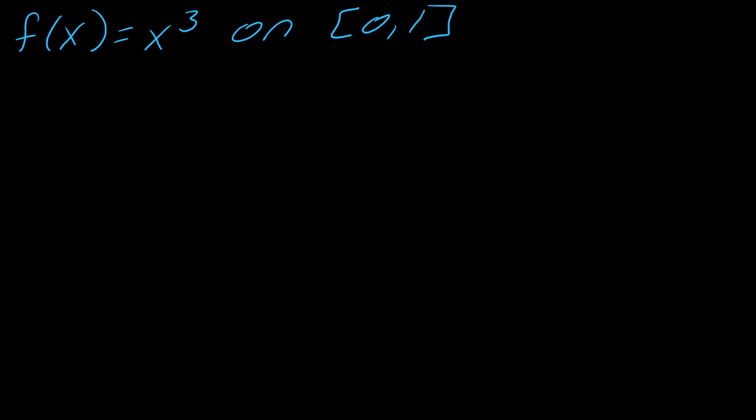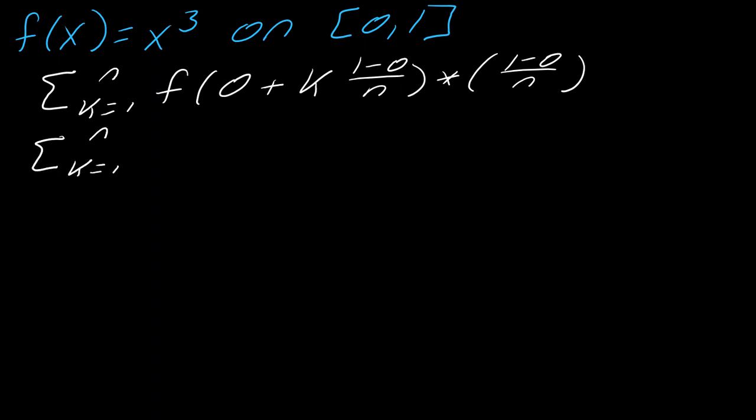Okay, so I am going to set that up as well. That is like the worst looking sigma ever. So let's see, here's k equals 1 to n, f of, this starts at 0. This will be 1 minus 0 divided by n, all of that times 1 minus 0 divided by n. So I want to simplify this as much as I can before I go any farther. If I simplify this, this will really just be k over n, and then this times 1 over n.